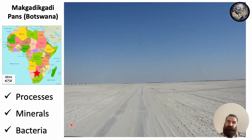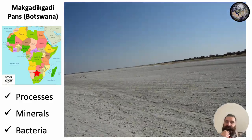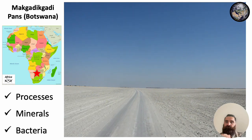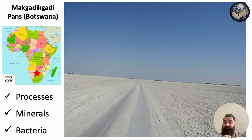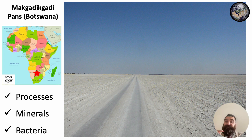The Makgadikgadi salt pans look very flat, covered by a thin crust of evaporite — a hypersaline environment. Even the underground water is very saline. There are a number of processes here which are very interesting because they might explain some features we see on Mars. Some minerals form because of the extreme conditions of this place, and inside those minerals there are bacteria — extremophiles.